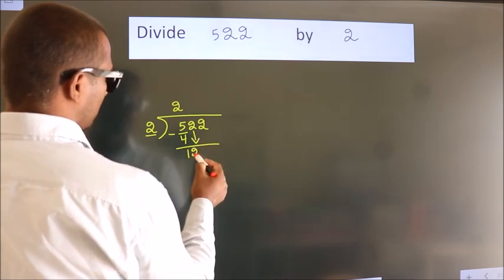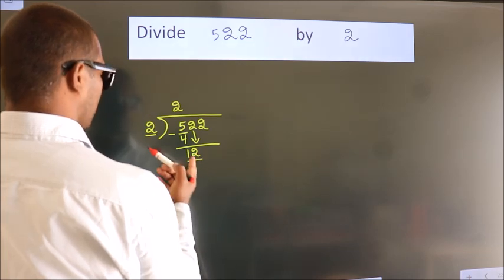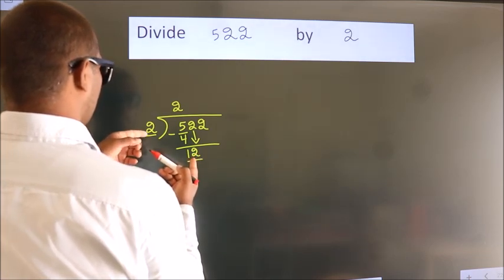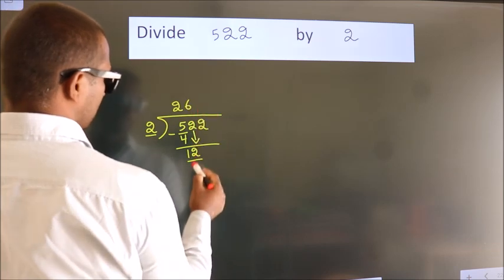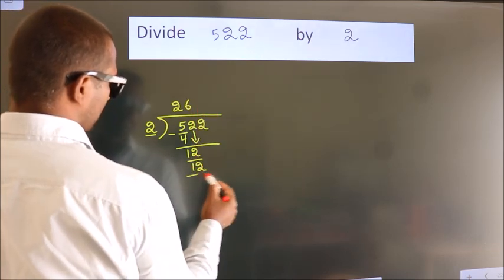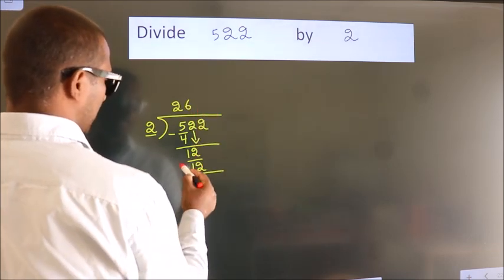So 2 down, so 12. When do we get 12 in 2 table? 2 times 6 equals 12. Now we subtract, we get 0.